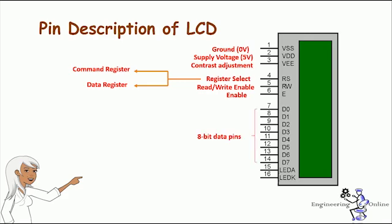Pin 6 is the enable pin — it sends data to the data pins when a high-to-low pulse is given. We just need to control the enable and RS pins to send characters and data accordingly. The LCD can work in two different modes: 4-bit mode and 8-bit mode. In 4-bit mode, we send the data nibble by nibble — first the upper nibble, then the lower nibble. A nibble is a group of 4 bits.